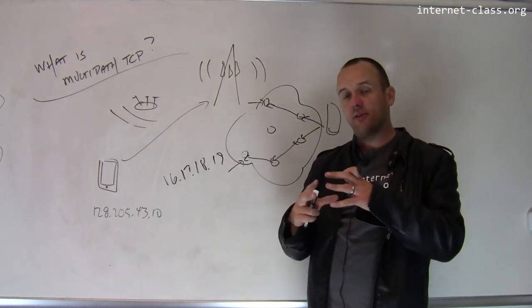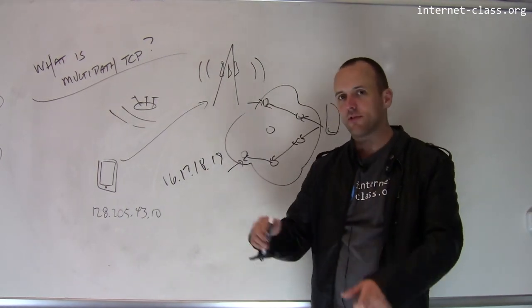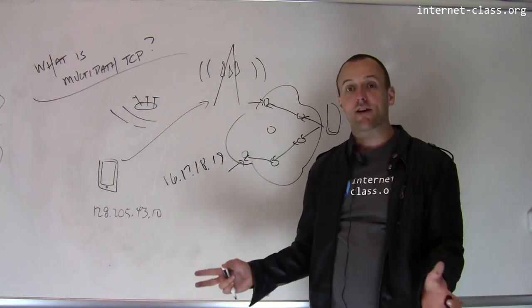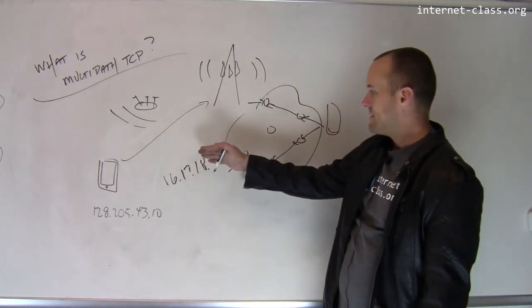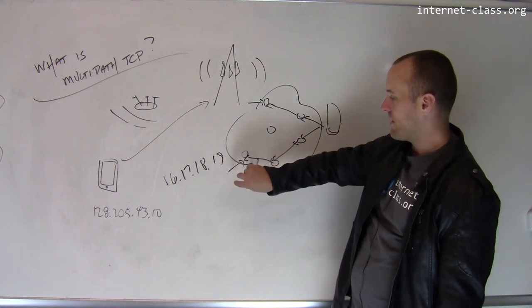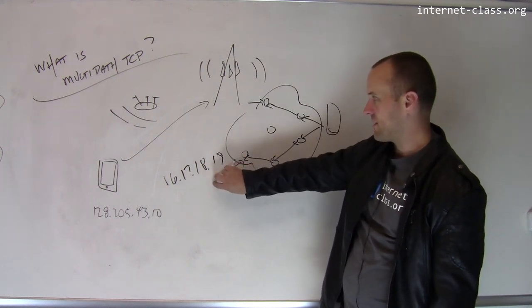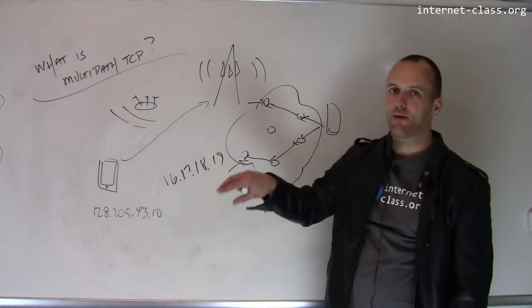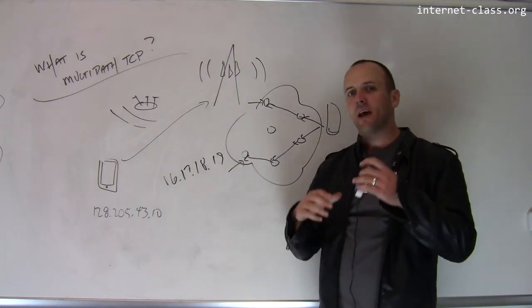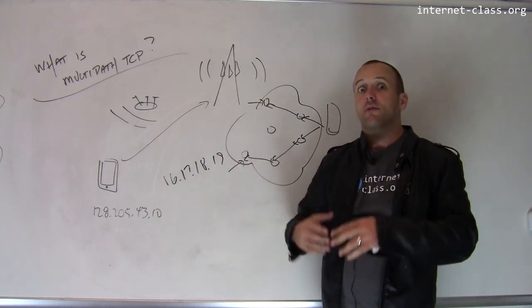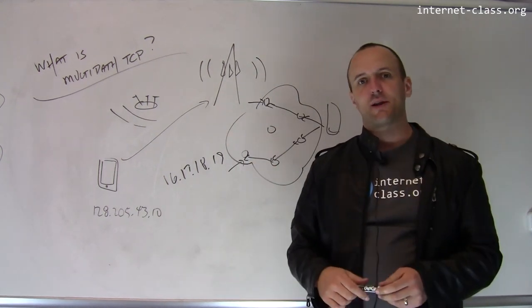So from the perspective of the application or perspective of whatever is the client that's using the network, nothing has really changed. It's still getting data, but behind the scenes, the data connection has been shifted from entering at one point in the internet with a particular IP address to entering at a different point in the internet with a different IP address. So this is a pretty exciting development in TCP and a very modern way to connect to the internet using all of the interfaces that you have available.